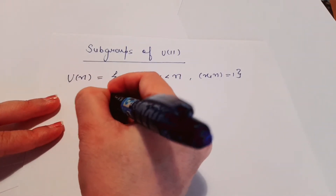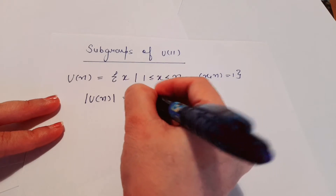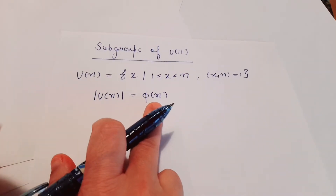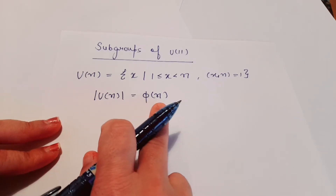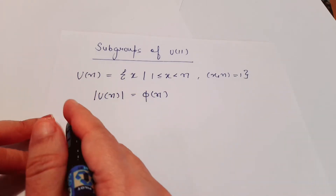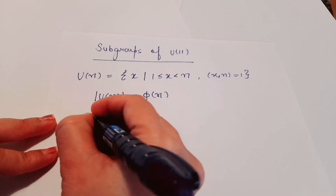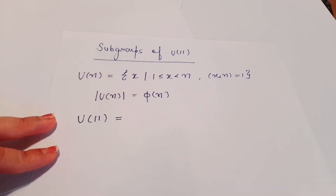We also studied the order of U(n). The order of U(n) is phi(n). If you don't know phi(n), you can see my other video where we have a detailed study of phi(n) and how we can count it. So here in this video we have U(11).